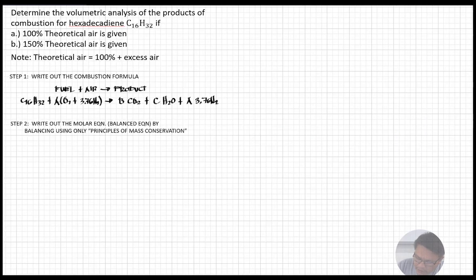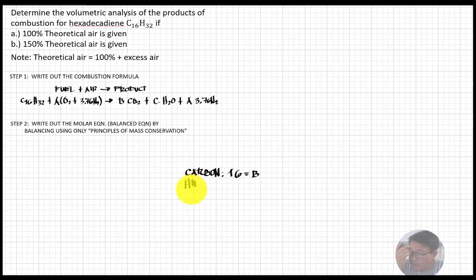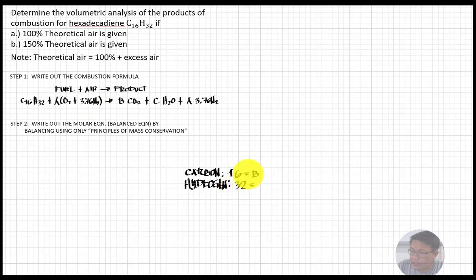We proceed to step two: write out the molar balance equation using the principle of conservation of mass from thermodynamics. For carbon: we have 16 on the fuel side, so B equals 16. For hydrogen: we have 32 on the fuel side, which equals 2C on the product side, so C equals 32 divided by 2.